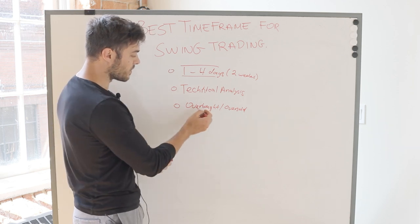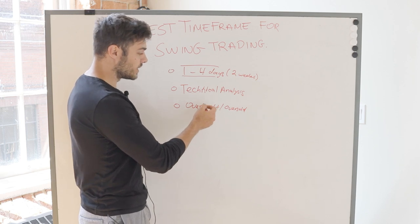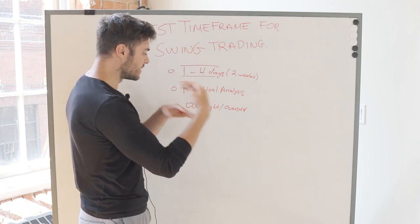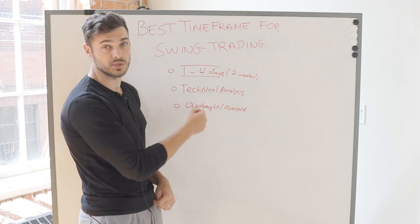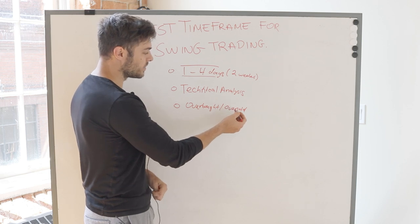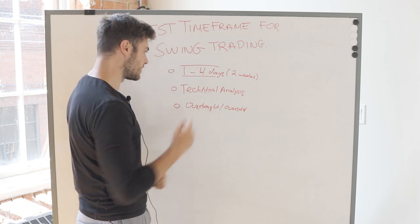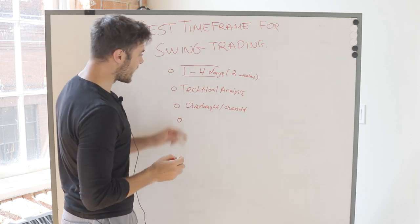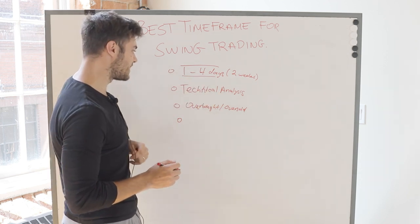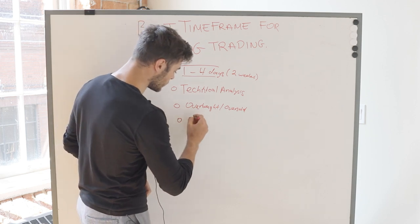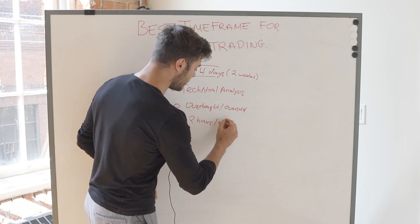In the case where there is an overbought market, swing traders will often look to sell the market short until it comes back into regular conditions. Same thing with oversold patterns — if the market is oversold, a swing trader will often look to buy it in oversold conditions until the market returns back to regular conditions. As a result, because the time frame of the trades is one to four days and it's based on technical analysis, swing traders will usually put about two hours or so of screen time on a daily basis.